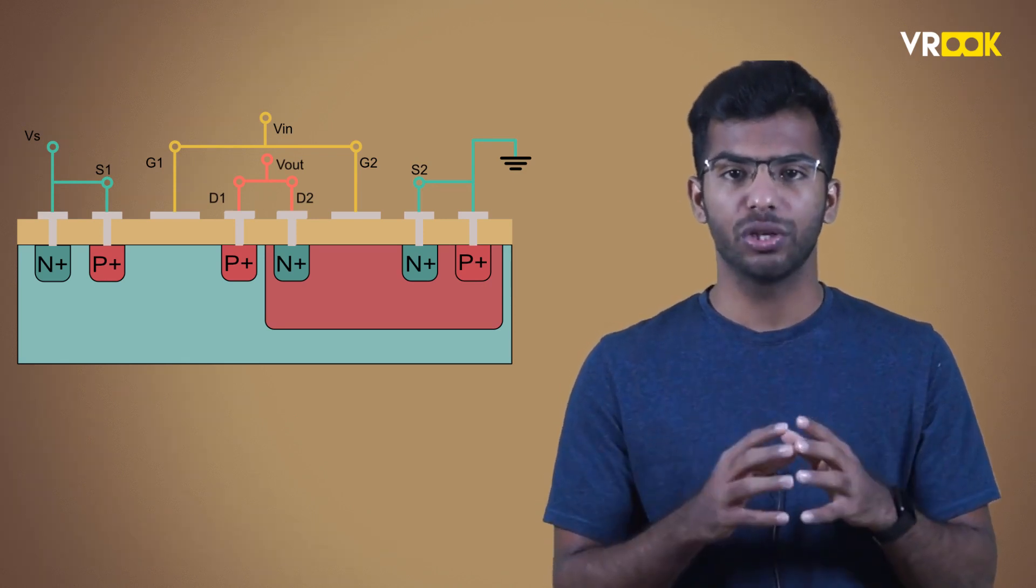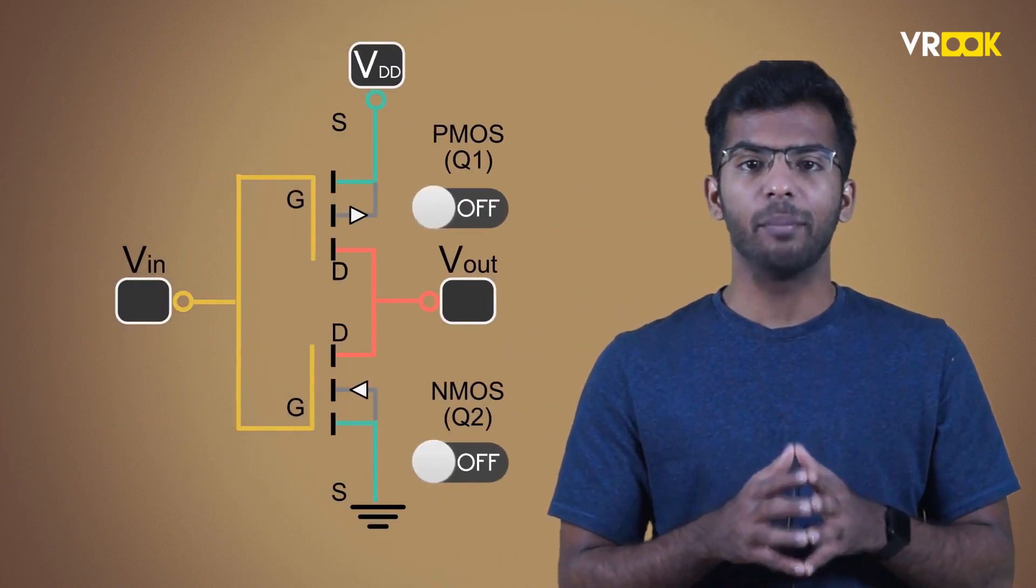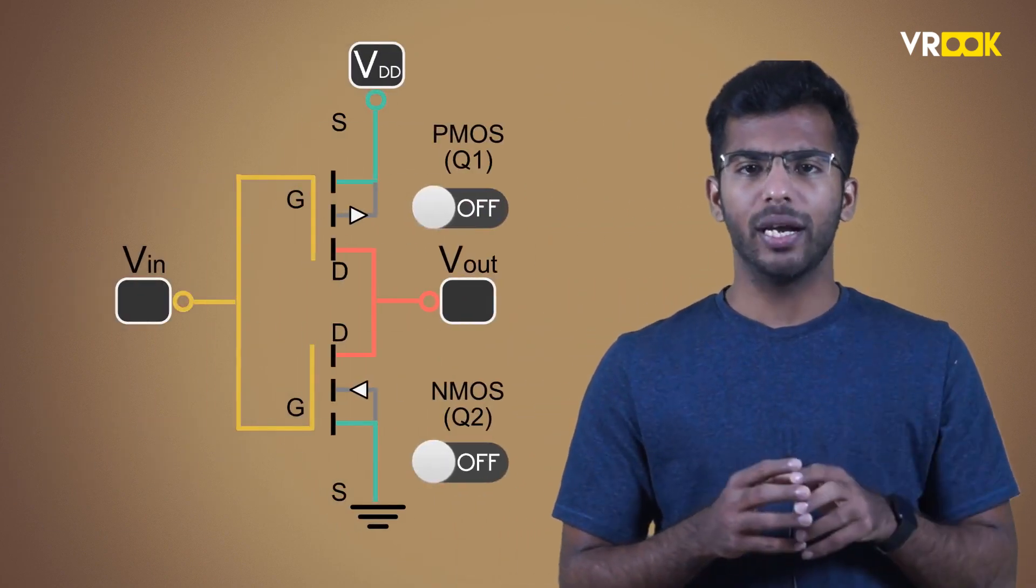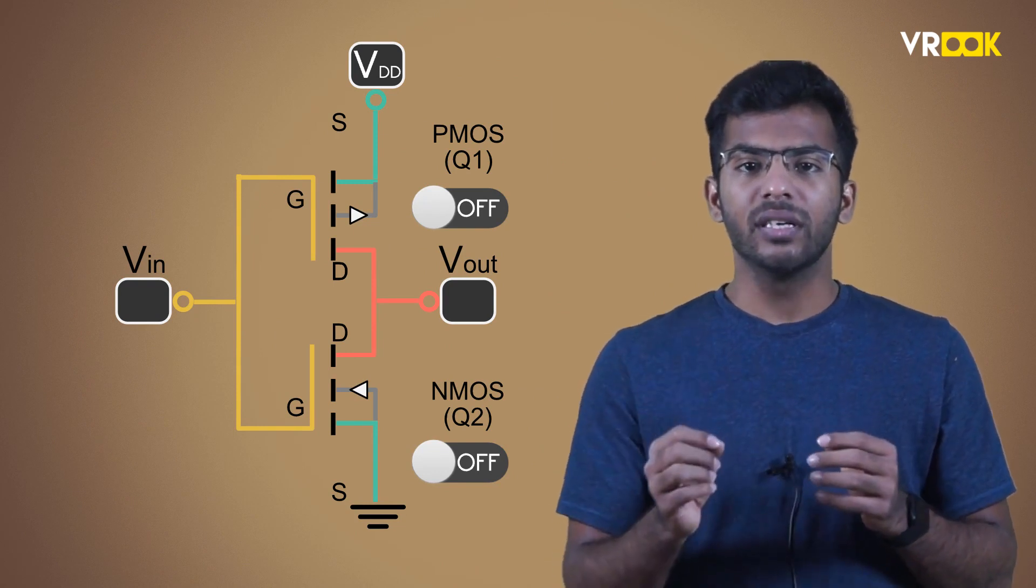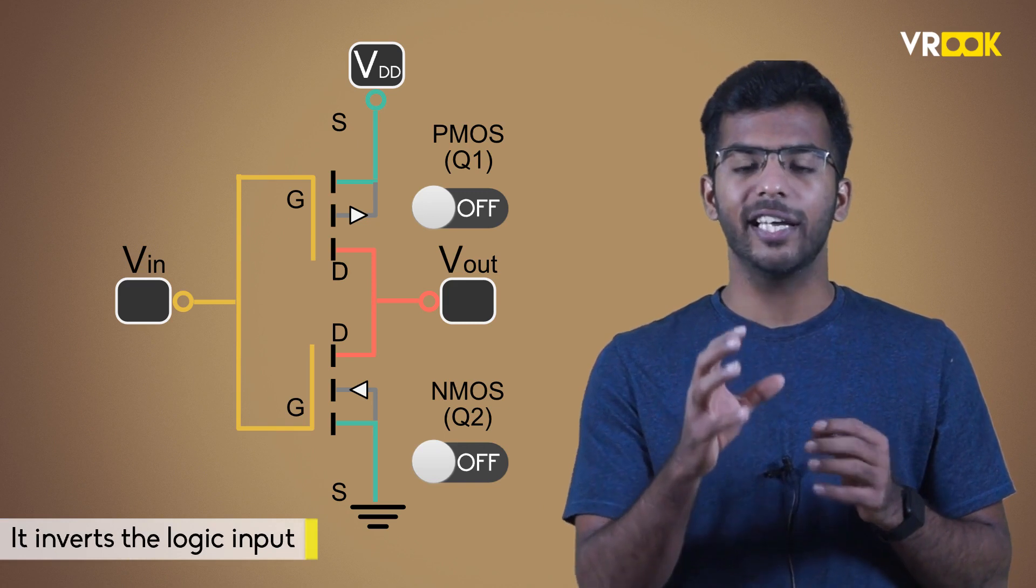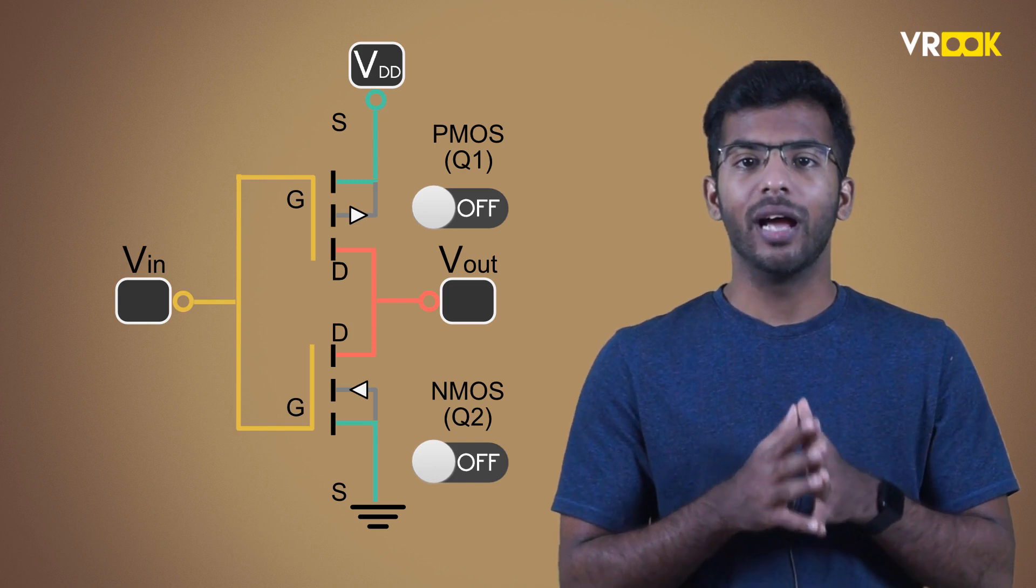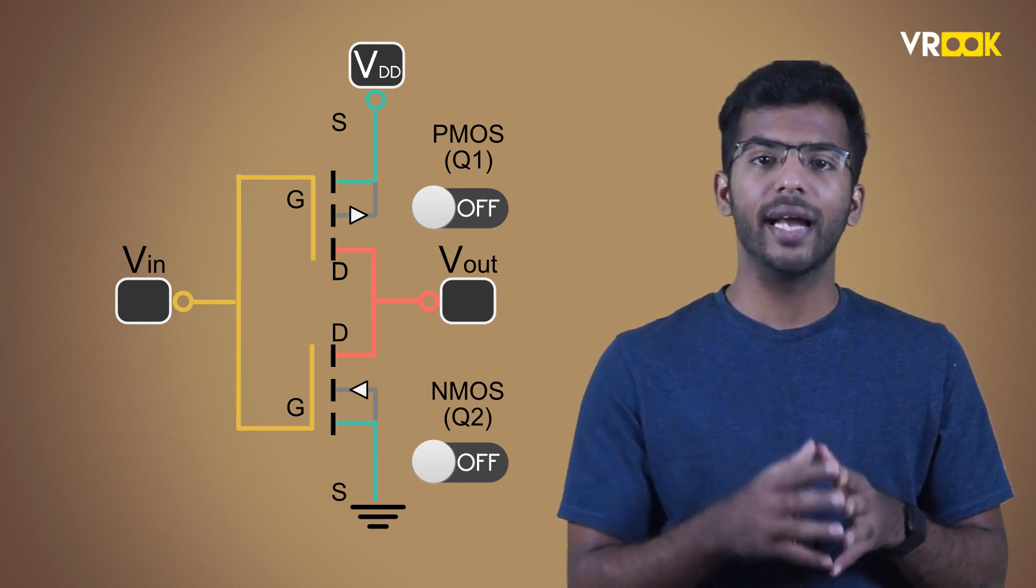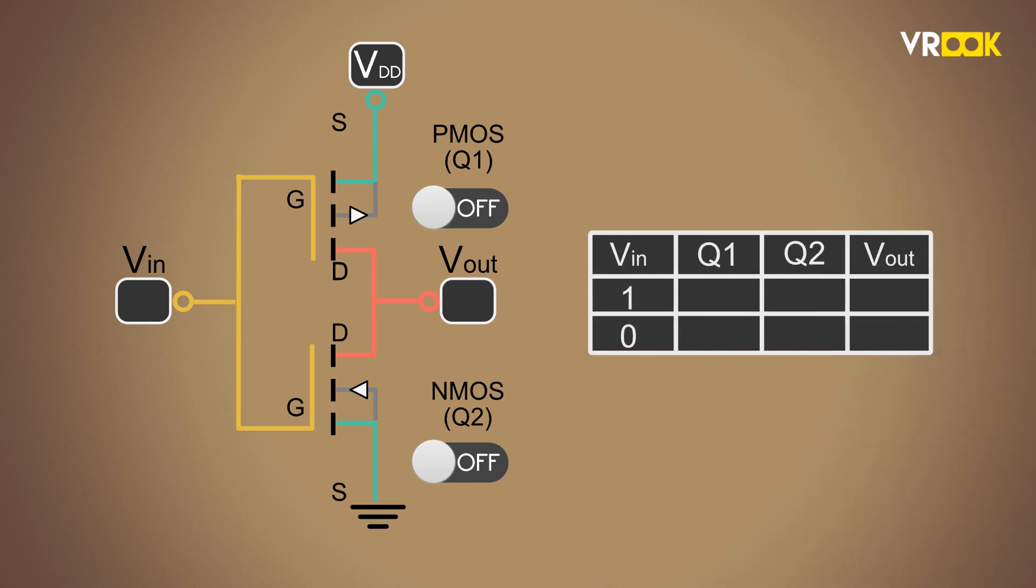This is the basic structure of a CMOS. Now, let us see how it works as an inverter. We can understand it better through a simple circuit diagram of CMOS. The input and output connections are the same as we saw in the structure. Inverter means it inverts the logic input. If you give input as logic 0, you will get logic 1 at output, and if you give the input as logic 1, you will get logic 0. Let us see how we can achieve this through CMOS.